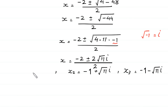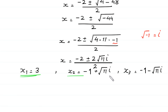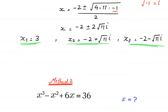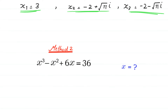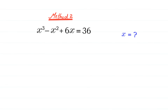So from Method 1, x₁ is equal to 3, x₂ is equal to negative 2 plus square root of 11 times i, and x₃ is equal to negative 2 minus square root of 11 times i. These are the three solutions. Now let us solve this equation by Method 2.